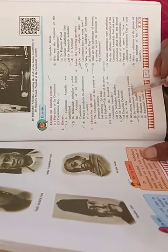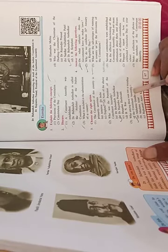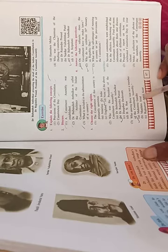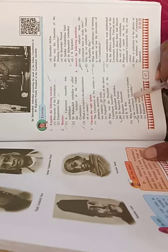Next: Who among these was not a member of the constitutional assembly? Dr. Mahatma Gandhi, Maulana Azad, Rajkumari Amrit Kaur. Mahatma Gandhi was not a member of the constitutional assembly.